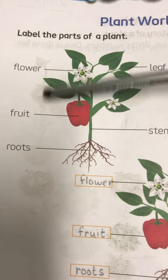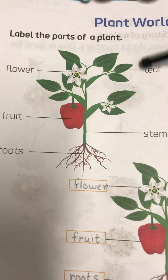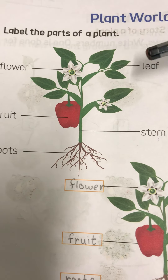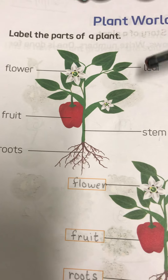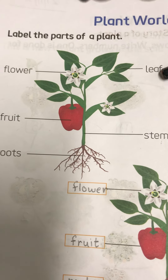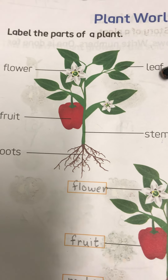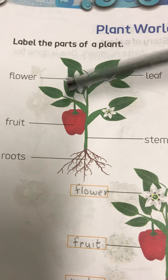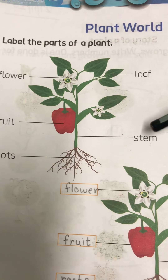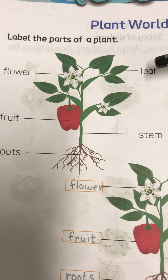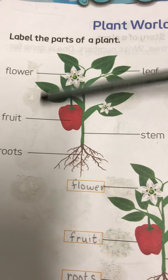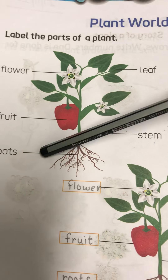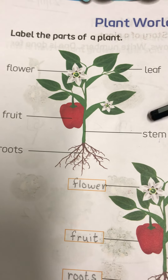So kids, what is this? This is a plant. And kids, do you know that each plant has many different parts, like flower, fruit, roots, stem, and leaf? So it is a plant and a plant has many different parts.